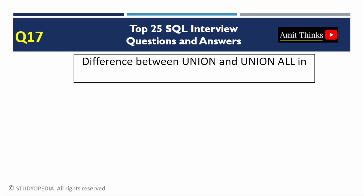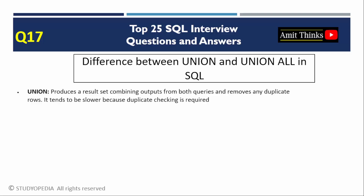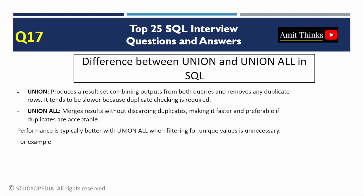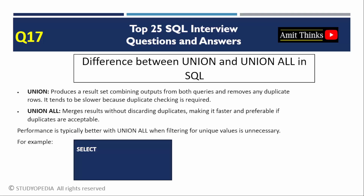Question 17: Difference between UNION and UNION ALL. UNION combines results and removes duplicates; it is slower due to duplicate checks. UNION ALL combines results without removing duplicates; it is faster and preferred when duplicates are acceptable. Use UNION ALL for performance-critical queries if duplicate retention is acceptable. Here is an example of UNION ALL which merges results without discarding duplicates.